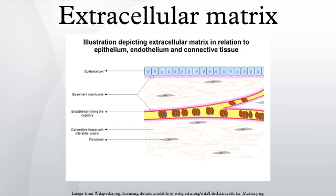Role and importance: due to its diverse nature and composition, the ECM can serve many functions, such as providing support, segregating tissues from one another, and regulating intercellular communication. The extracellular matrix regulates a cell's dynamic behavior.